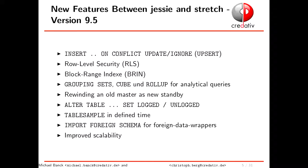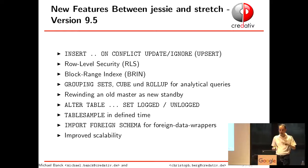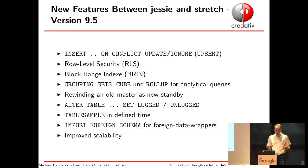9.1 was Wheezy, 9.4 was Jessie, and 9.6 is going to be Stretch. A quick rundown of changes since Jessie: in 9.5, one big addition developers love is Upsert — called INSERT ON CONFLICT UPDATE/IGNORE. There's also row-level security, so you can tell the database to only show a row to a user if they match certain criteria. There are block range indexes, analytic queries, unlogged tables for performance, and you can now import whole schemas from other databases via foreign data wrappers.